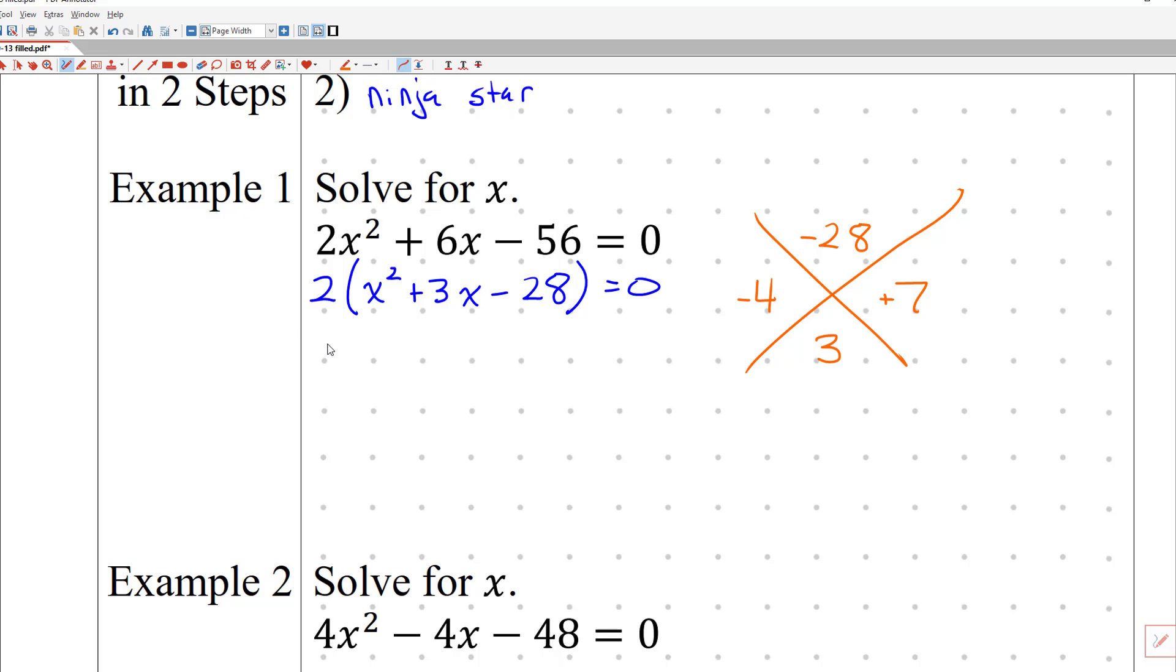There's our solution to our ninja star. Let's come back over here and say this is now 2 times the quantity of x minus 4 times the quantity of x plus 7, set equal to zero. We're using the zero product property, and I know that we have three pieces. You'd set this 2 equal to zero, this x minus 4 equal to zero, and this x plus 7 equal to zero. But it doesn't really make sense to say that 2 is equal to zero. That's not an answer.